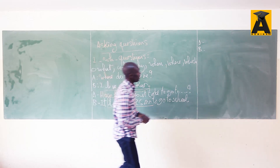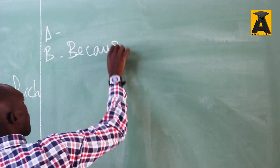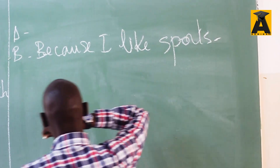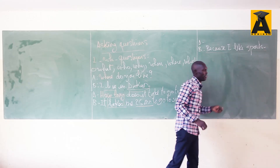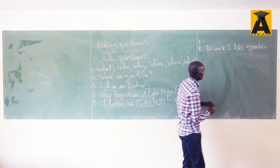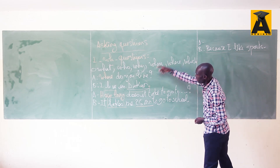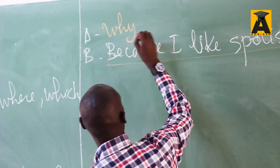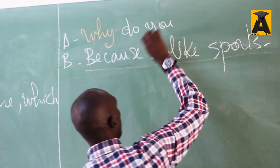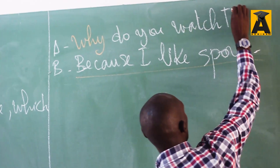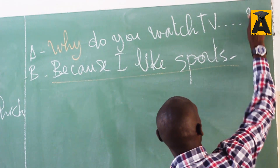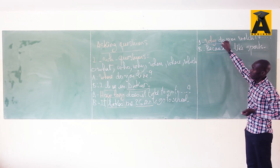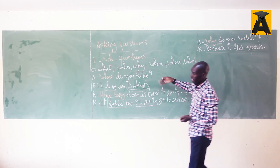Here B's answer will be something like 'Because I like sports.' You are asked to pose a question whose answer will be 'Because I like sports.' Since the answer is a reason, the question word is 'why.' The tense is simple present, so: 'Why do you watch TV?' — for example, every day. The answer gives the reason, so we use 'why' as the question word.